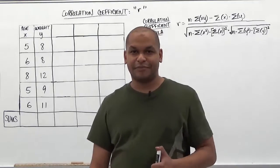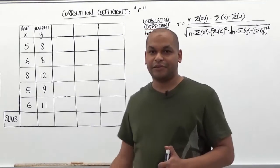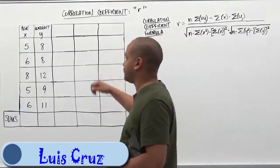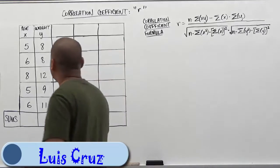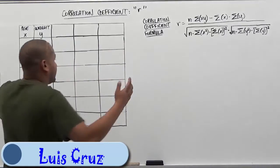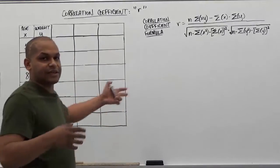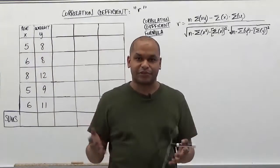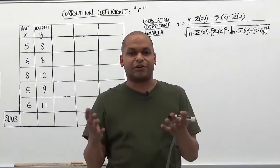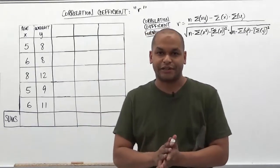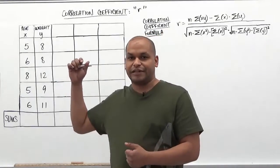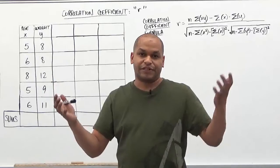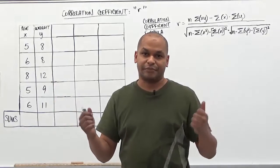Welcome to HelpYourMath.com. In today's video, we'll be talking about the correlation coefficient. When we're doing correlation coefficients, they usually correspond with two variables, two things that we're trying to correlate to each other. In this case, we'll be trying to correlate the age of a child to the weight of a child in kilograms.